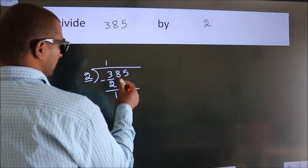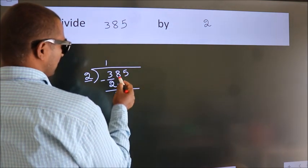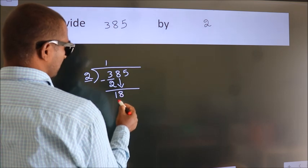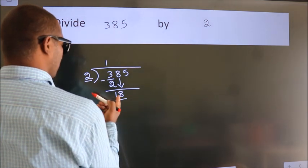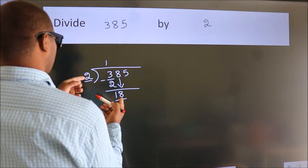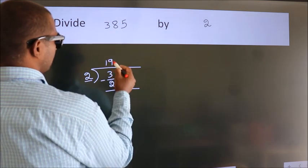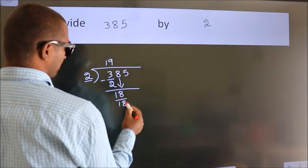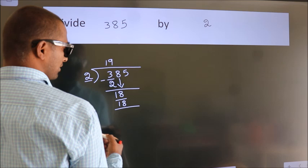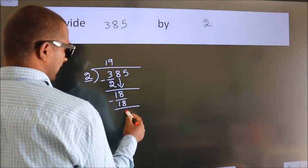After this, bring down the next number. So, 8 down. 18. When do we get 18? In 2 table, 2 9s 18. Now, we subtract. We get 0.